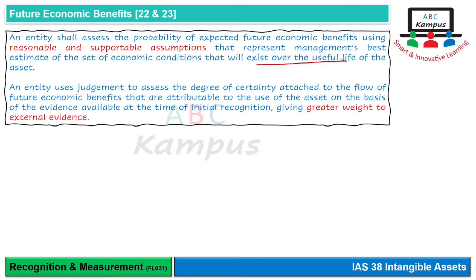When assessing probability, judgment is required because certainty cannot always be determined. If evidence is available, external evidence is given more weight than internal evidence or internal statements made by management.